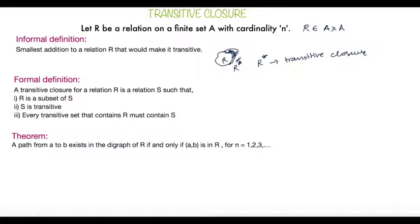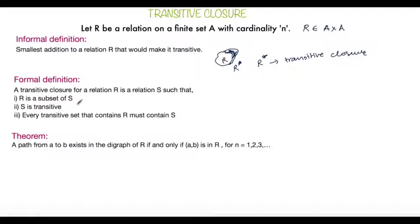This informal definition is a good way to remember what transitive closure is. But for completeness and precision, we also need a formal definition. The formal definition goes like this: the transitive closure for a relation R is a relation S such that three conditions are satisfied. The first condition is that R is a subset of S. The second condition is that S is transitive.